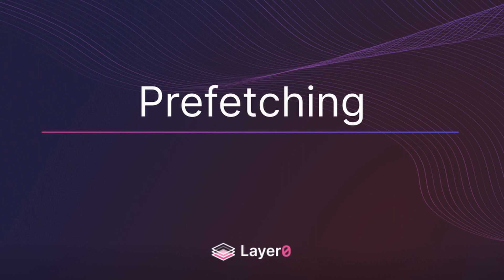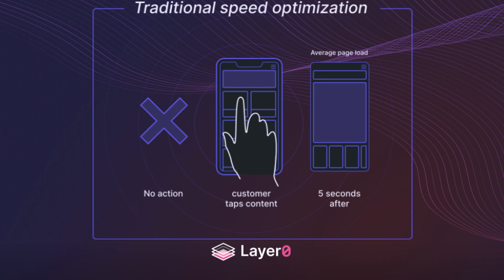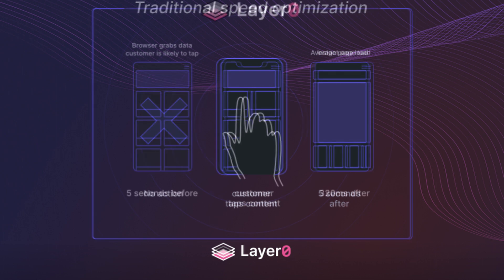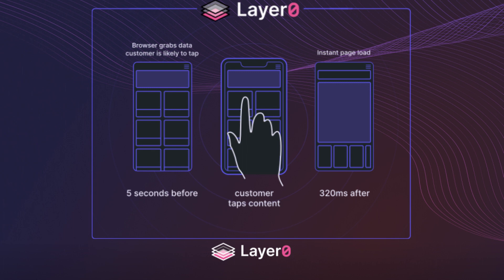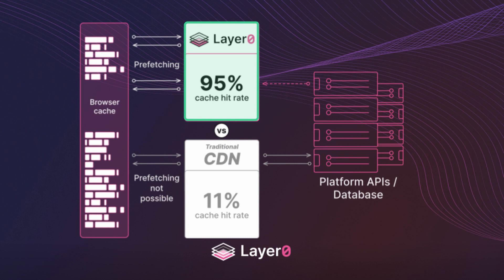Layer 0 puts the cherry on top with prefetching. The way we normally think about improving site speed is to reduce the time it takes for data to be available on a user's device after they have taken an action, like when they click on a product. With prefetching, Layer 0 intelligently predicts the data that the user might need, even before the user action is taken, and retrieves that information in advance. So when a user clicks on the product, the data is already available and the page load is near instant. This prefetching is only done for pages which are already cached on the Layer 0 network, so it has no impact whatsoever on your backend systems.